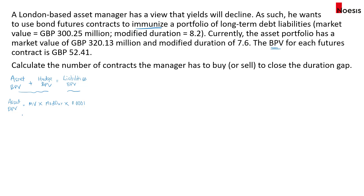The asset BPV is based on the market value of £320.13 million. So that's £320,130,000 multiplied by 7.6, multiplied by 0.0001, which equals £243,298.8.